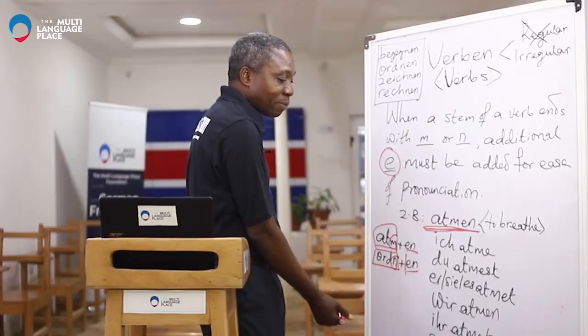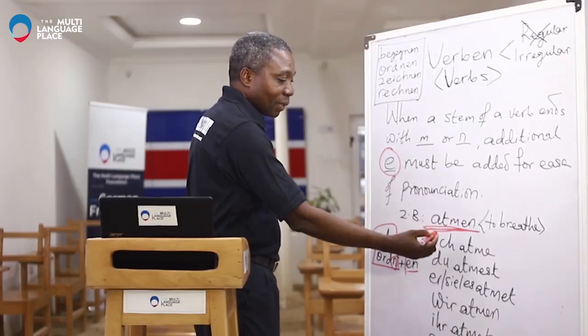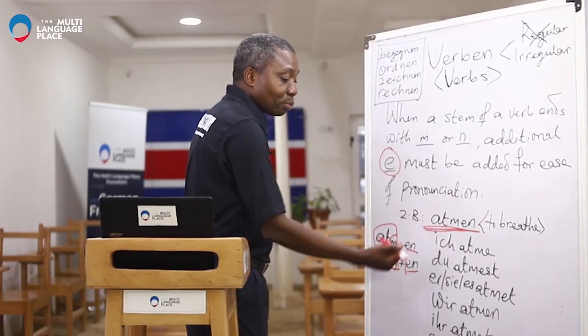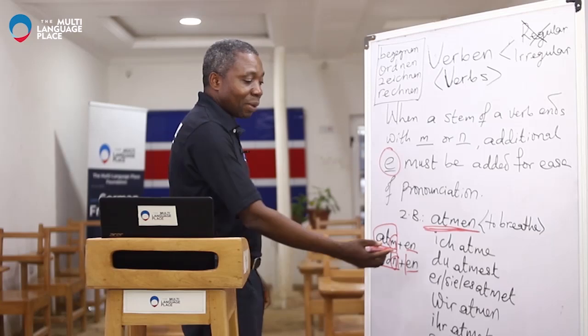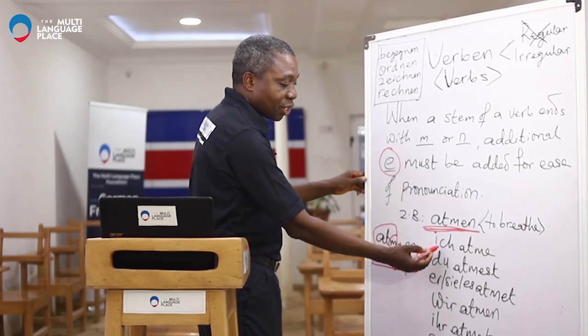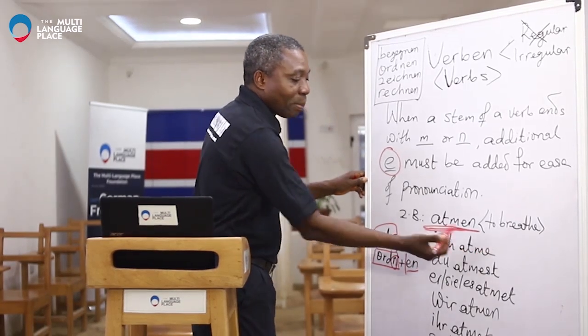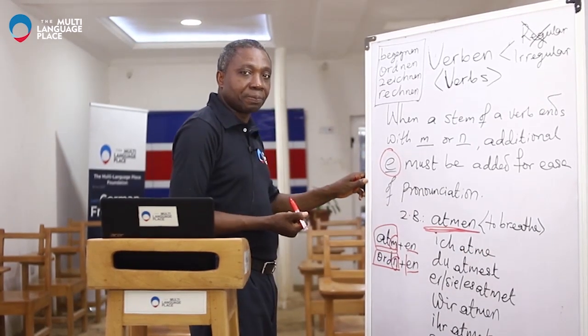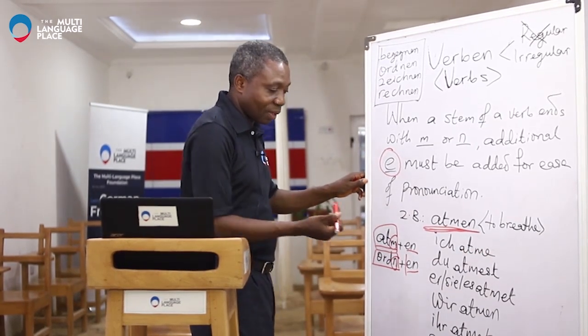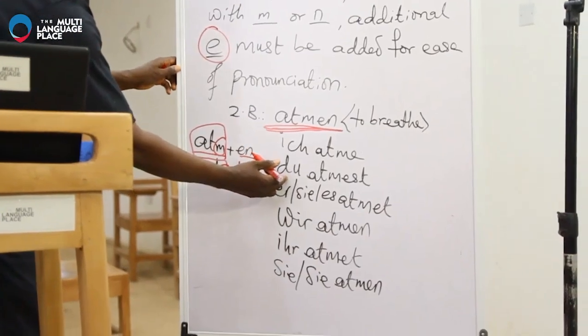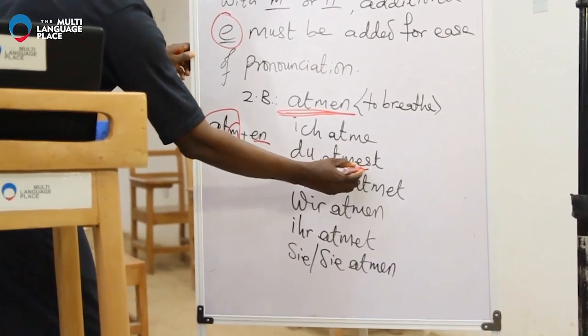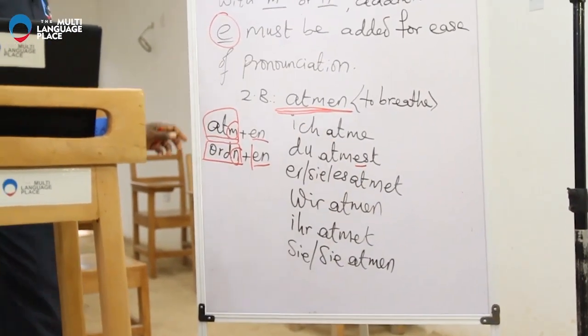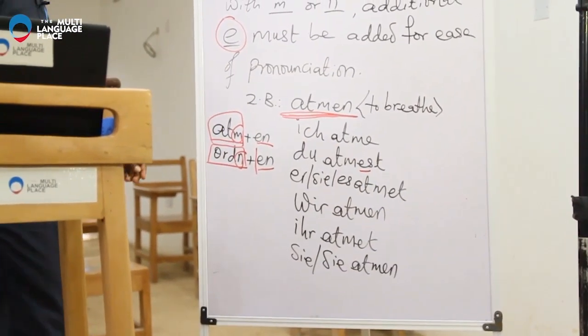So we go back to 'atmen,' which means to breathe. We have: ich atme, du atmest — there is an extra E added here. For the second and third person singular and second person plural, the additional E is inserted before the ending.